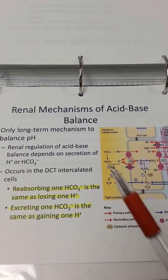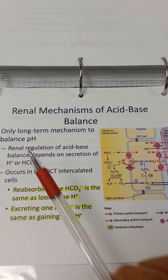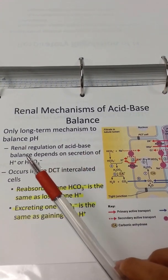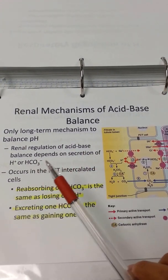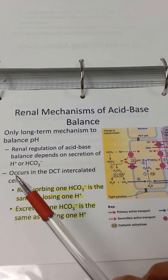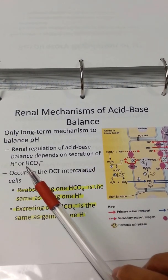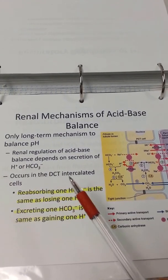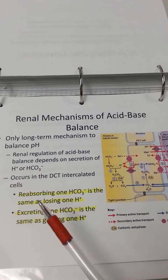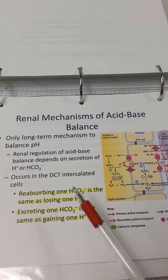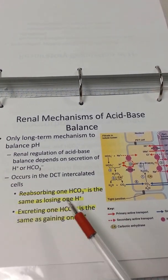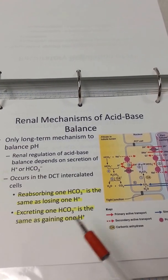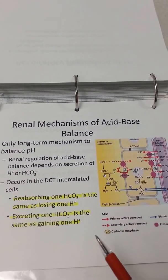Renal mechanism of acid-base balance is the only long-term mechanism to balance pH. Renal regulation of acid-base balance depends on secretion of hydrogen ions or bicarbonate. Occurs in the DCT intercalated cells. Reabsorbing one bicarbonate is the same as losing one hydrogen ion. Secreting one bicarbonate is the same as gaining one hydrogen ion.